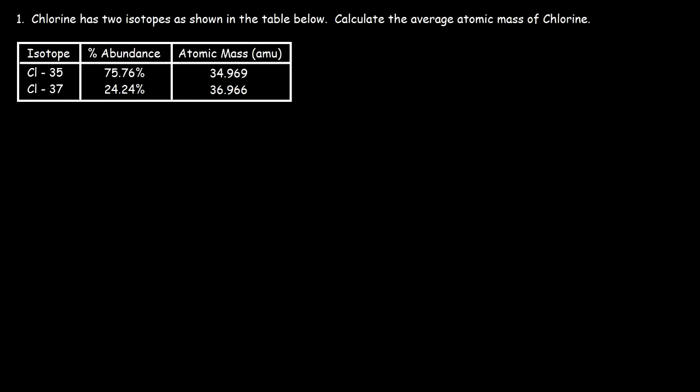In this example problem we have chlorine which has two isotopes shown in the table below: chlorine-35 and chlorine-37. We're given the percent abundance of each isotope and also the atomic mass of those two isotopes. So using that data, how can we calculate the average atomic mass of chlorine?